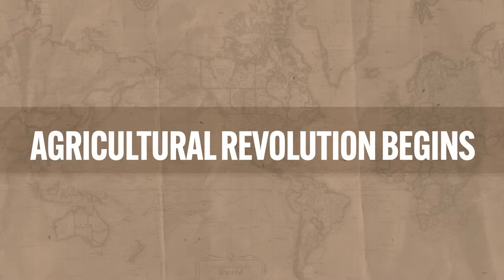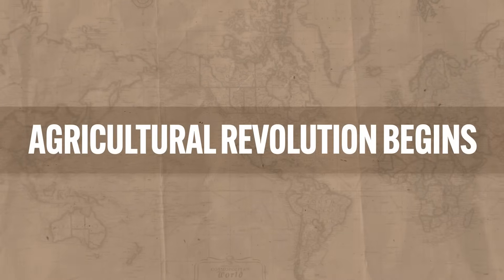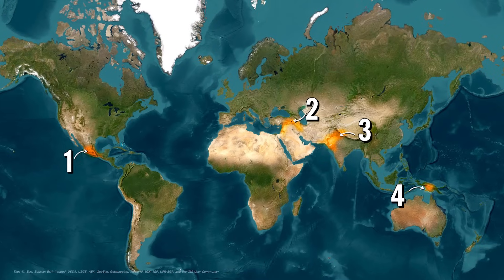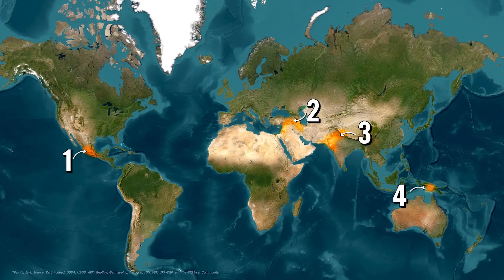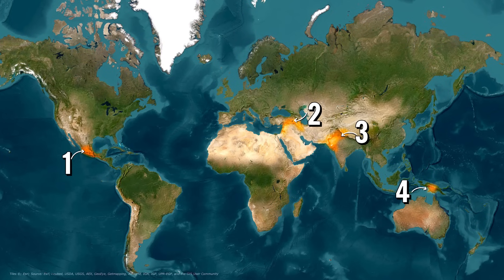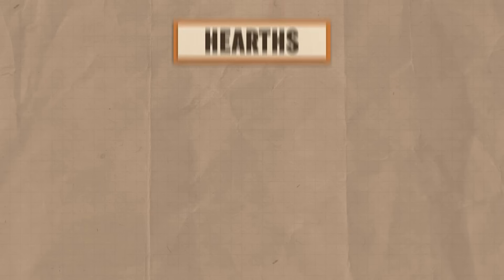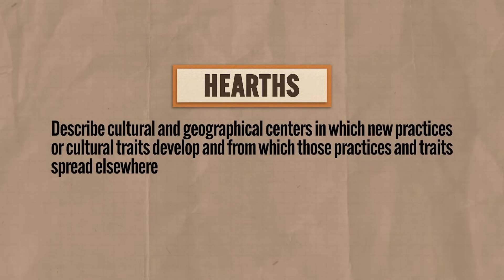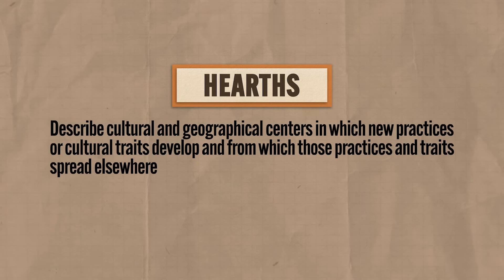You know what the agricultural revolution was, but you also need to know where it began. I'm going to tell you about four different places. To be clear, the domestication of plants and animals occurred in more places than these four, but these are the four you absolutely need to know. We refer to these birthplaces of agriculture as hearths, which describes the cultural and geographical centers in which new practices and cultural traits develop and from which those practices and traits spread elsewhere.